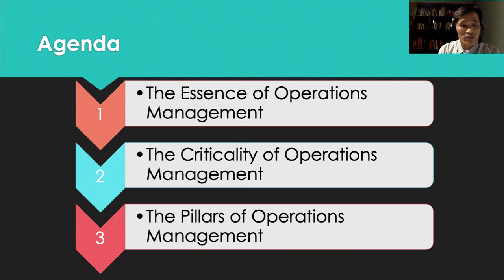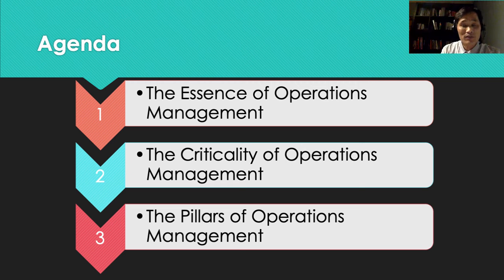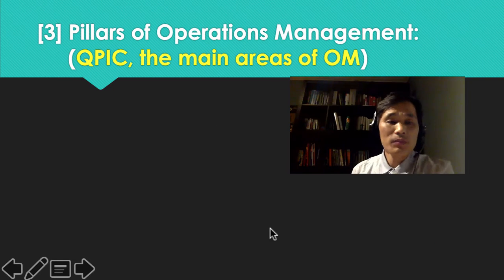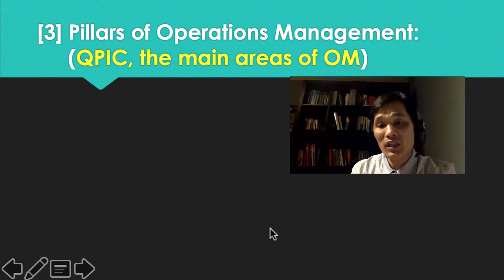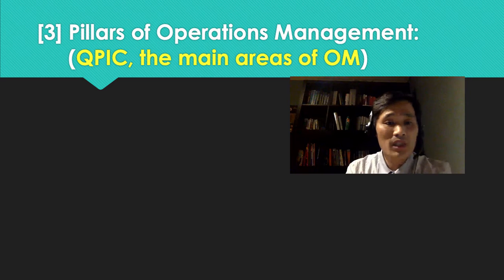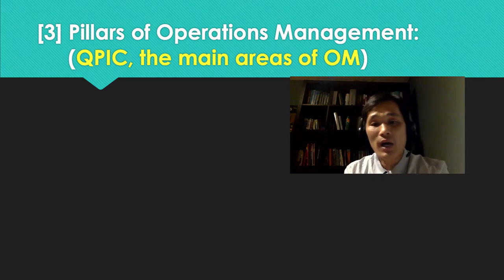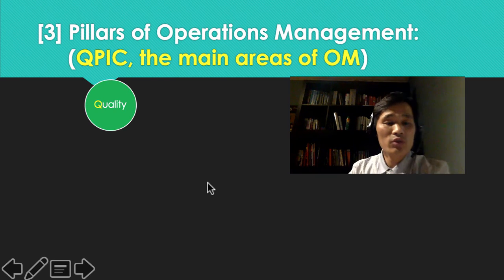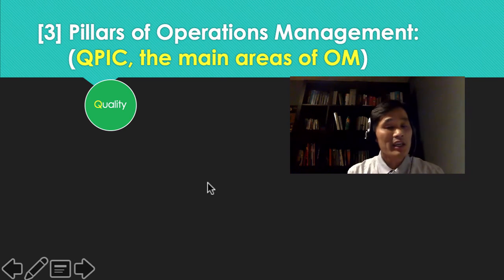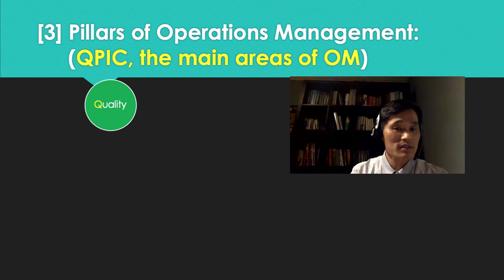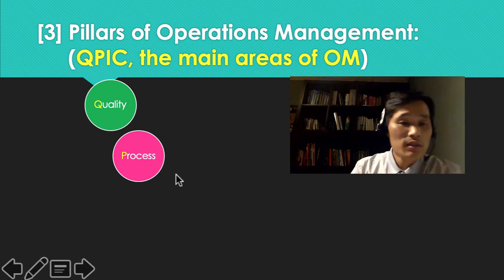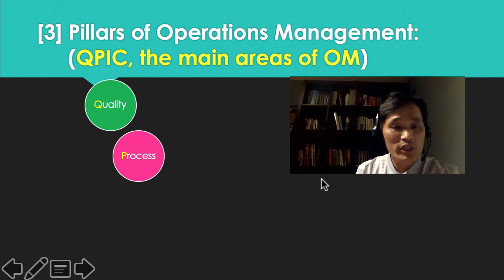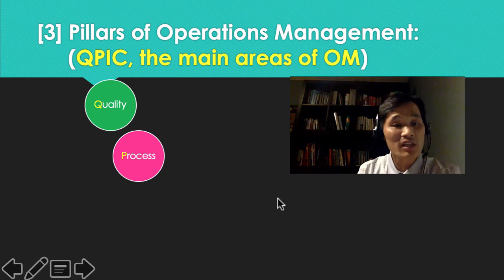The third agenda in this lecture is the pillars of operations management. There are four pillars, and I hope you remember them after taking this course. The pillars of operations management are QPIC — an acronym. Q stands for quality, which is a very important part of operations management. P stands for process — what kind of process do we use to produce, and how do we arrange that process.